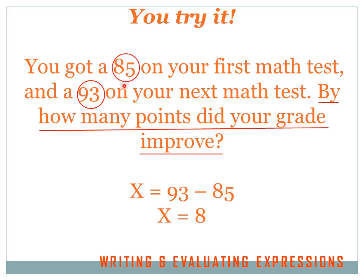You got an 85 — circle the 85, that's a number. You get an 85 on your first math test and a 93 on your next math test. Now underline the question: By how many points did your grade improve? Remember, if we've got a 'how many' question, we're probably going to substitute X for 'how many.' X equals how much did your grade improve? Your higher grade was 93 and your lower grade was 85. So X equals 93 minus 85. X equals 8.